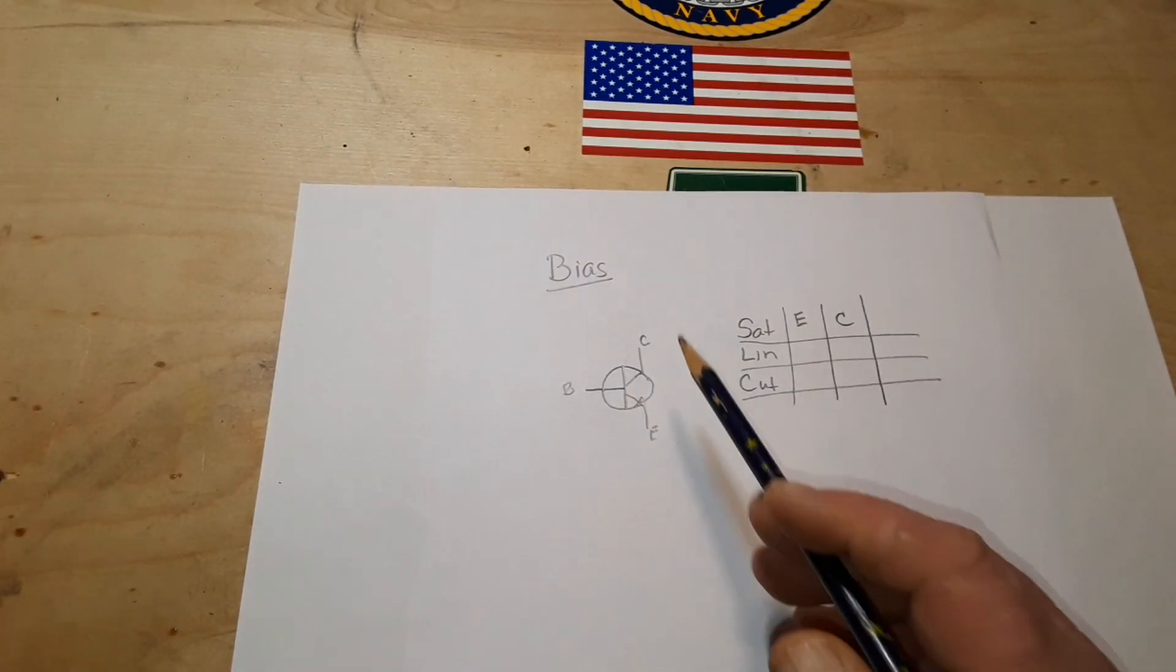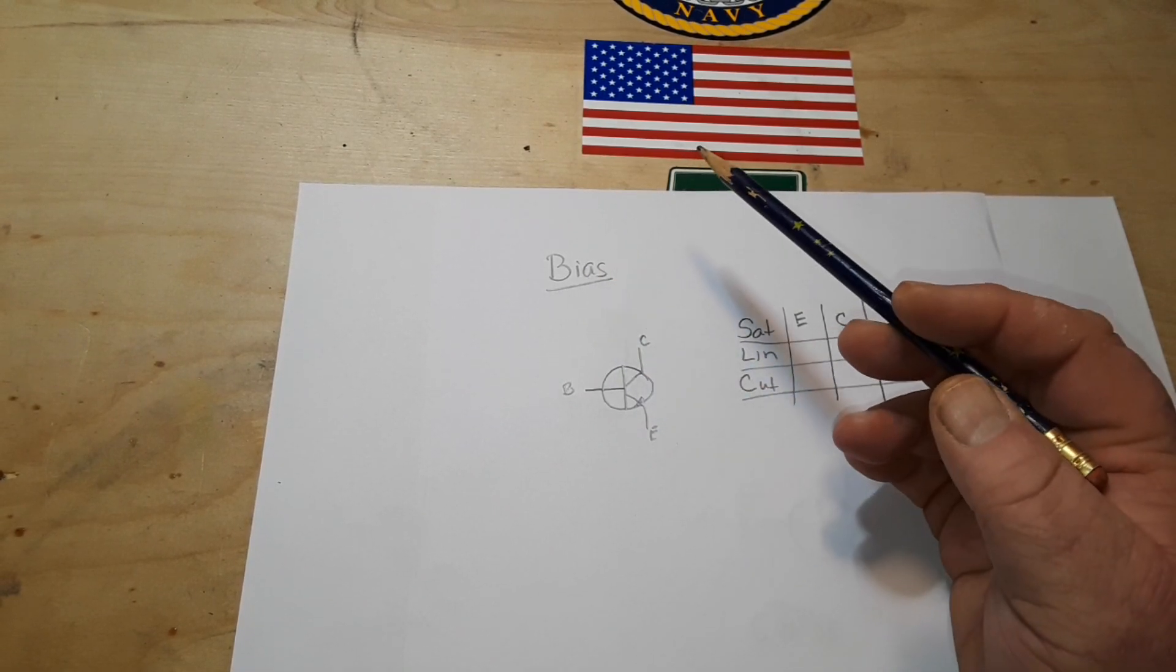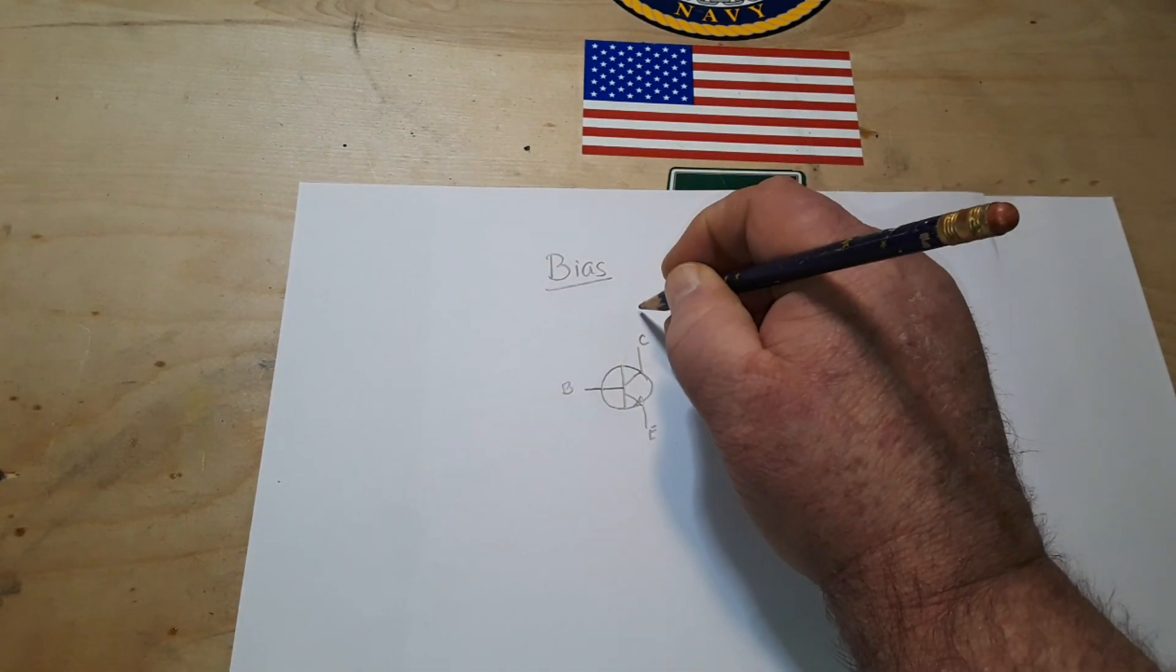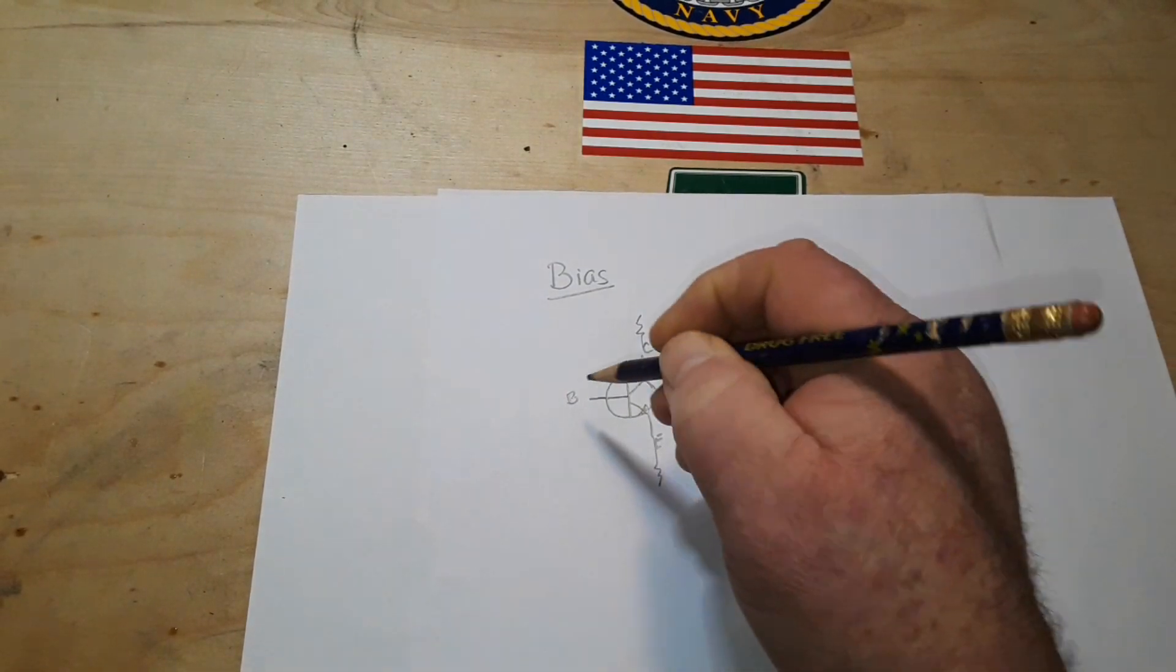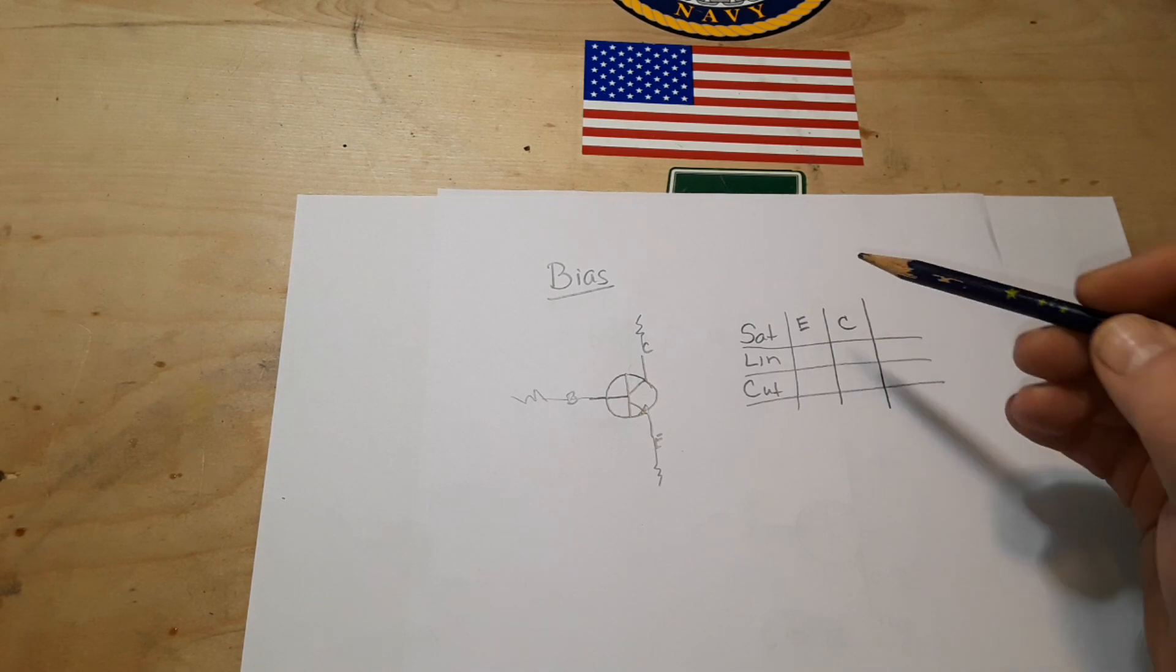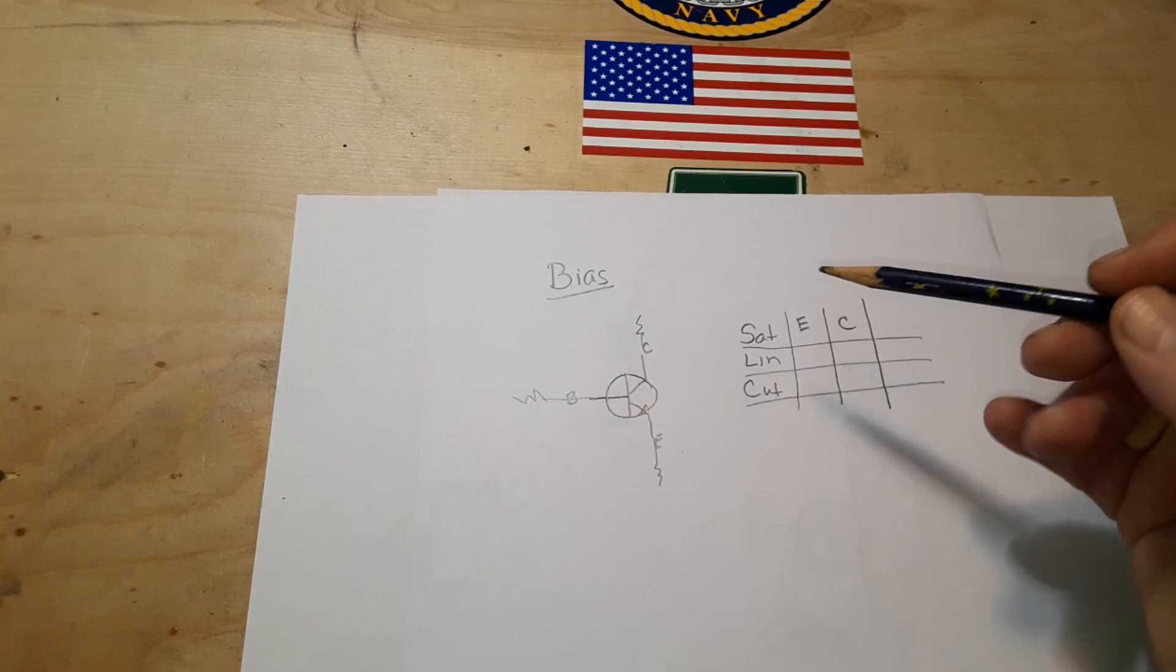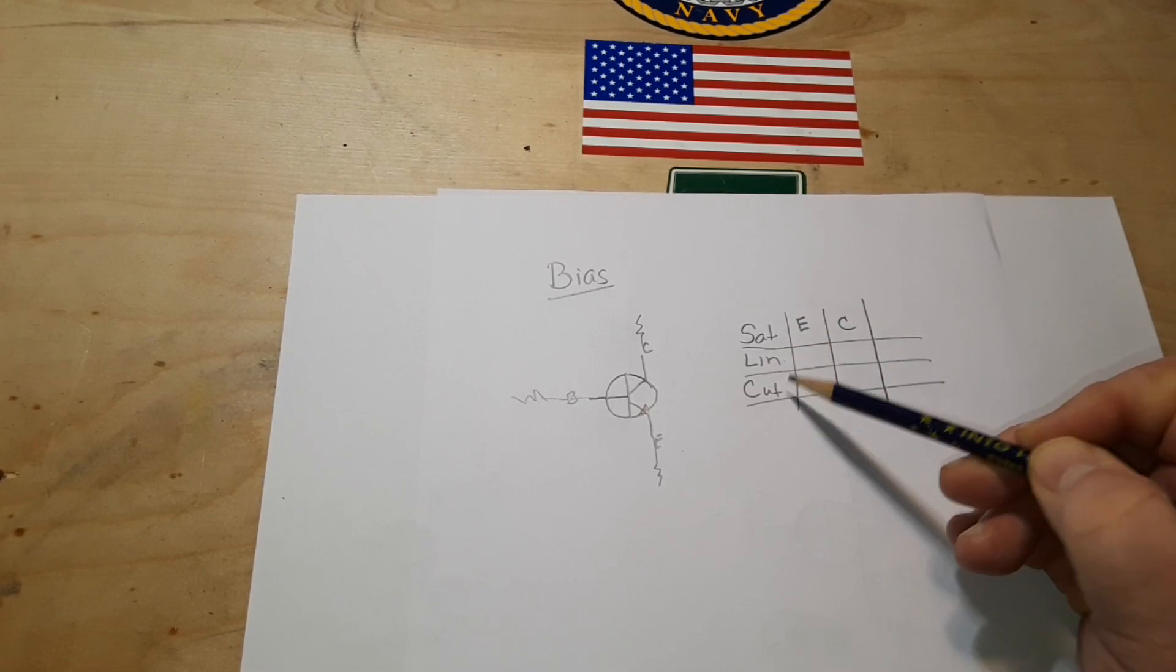One of the things that you'll hear battered around with bipolar junction transistors and MOSFETs is bias. When we're talking about bias in a general term, we're talking about adding some resistors to control the behavior of the transistor. But there's another way to talk about it, and that is to talk about biasing the individual junctions, the silicon junctions within the transistor. Here we have our three regions: saturation region, linear region, and cutoff region.